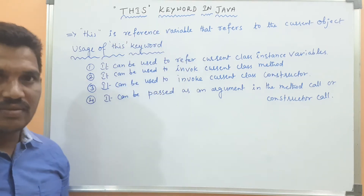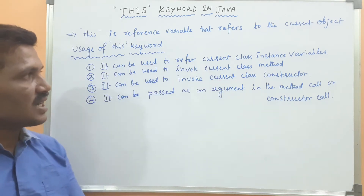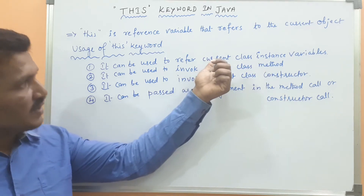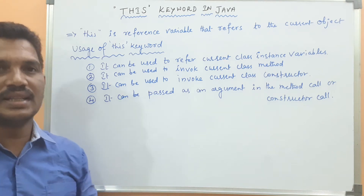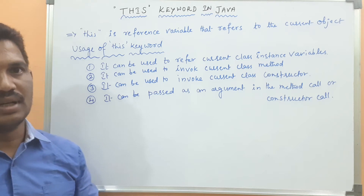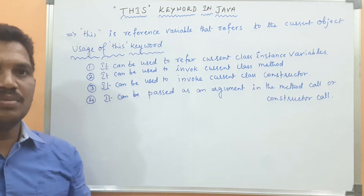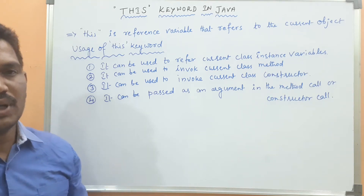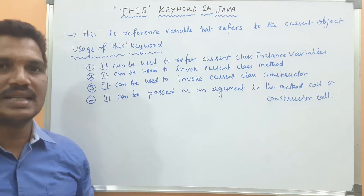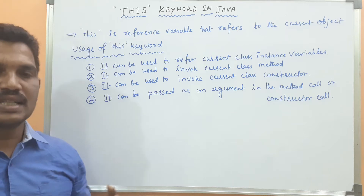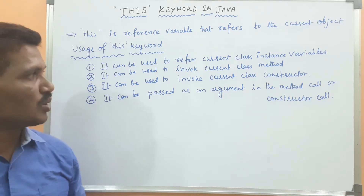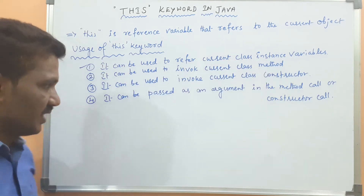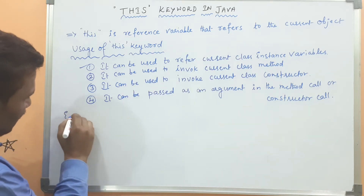The first use: 'this' keyword can be used to refer to the current class instance variables. This concept can differentiate the instance variable from the local variable. If local variables and instance variables both have the same name, how do you differentiate them? By using the 'this' keyword, which refers to the current class instance variable. I will explain with the help of an example.